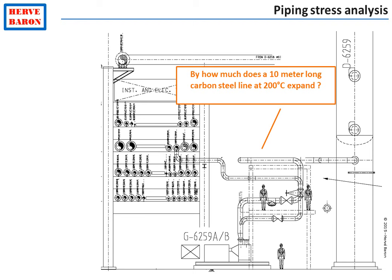Do you know by how much a 10-meter long line expands when its temperature raises to 200 degrees? It expands by 20 millimeters. Therefore, one understands that a direct connection between the nozzle of the column and the nozzle of the pump cannot be done. Indeed, when the line expands, it would lead to excessive effort on the pump nozzle, leading itself to misalignments between the driver and the pump, which would ruin the pump. Therefore, enough flexibility must be provided in the line so that it will absorb its thermal expansion and not bring excessive efforts on the nozzles of the pump and the equipment.